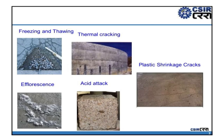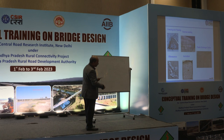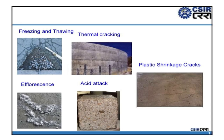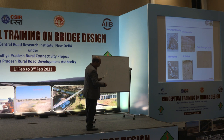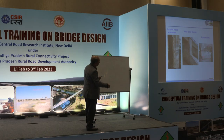A few illustrative figures are shown: freeze-thaw damage (not commonly seen in India), thermal cracking in thick sections, efflorescence, acid attack in industrial areas, shrinkage cracks, corrosion, alkali silica reaction, and sulphate attack. This is how they actually look visually.